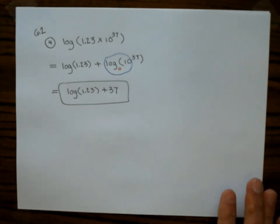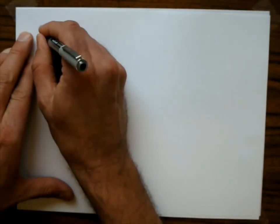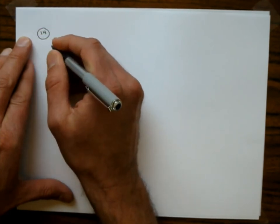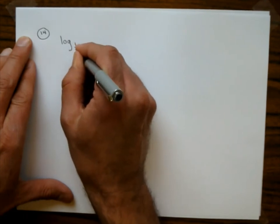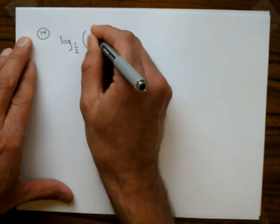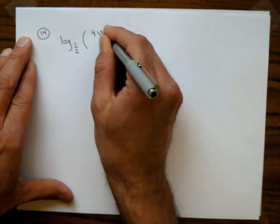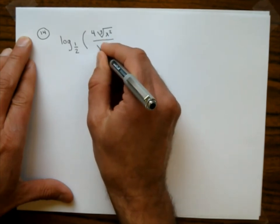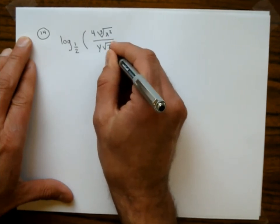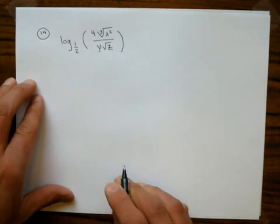Let's do another problem — number 14, which looks a bit more dramatic. Same instructions: expand the logarithm. Problem 14 is log base 1/2 of the quantity 4 times the cube root of x squared, all over y times the square root of z. This one is pretty intense.